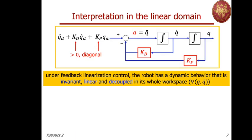After applying feedback linearization control, which cancels all nonlinearities, we end up with chains of double integrators from each component of A to each component of output Q. The controlled robot has linear dynamics invariant from the particular configuration Q, fully decoupled across its whole workspace regardless of velocity. The quadratic dependence of Coriolis and centrifugal terms is no longer present. In the joint space, it is like having for each joint an equivalent unitary mass M equal to 1, subject to the new command Ai.